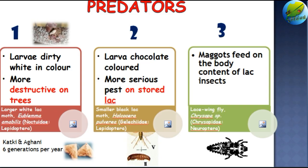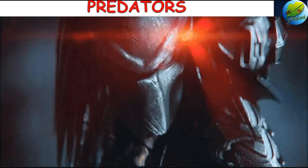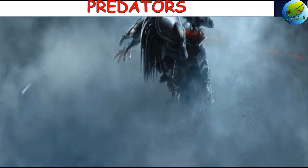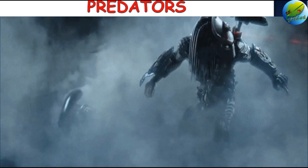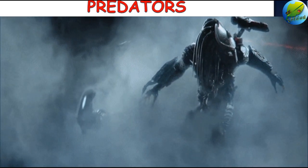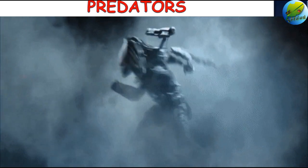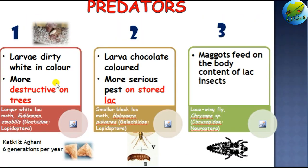Moving on to the next category — invertebrate pests — we have insect predators and parasitoids. The predators may not be large but they cause significant damage to lac cultivation, similar to how alien predators would. There are three major important predators.